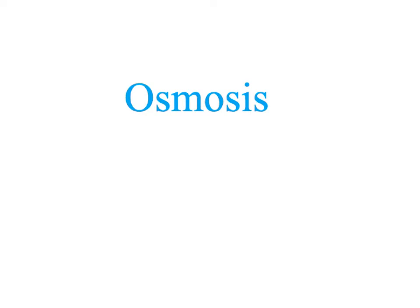We're next going to look at osmosis. Osmosis is a type of diffusion, but it only involves the movement of water molecules from a less negative to a more negative water potential — down a water potential gradient. This is a classic type of graph where we're looking at the change in mass due to gaining or losing water. The units are percentage change in mass, which allows comparison because different potato pieces will have had different starting masses. As you increase the concentration of sucrose, the percentage change in mass decreases and then starts to level off.